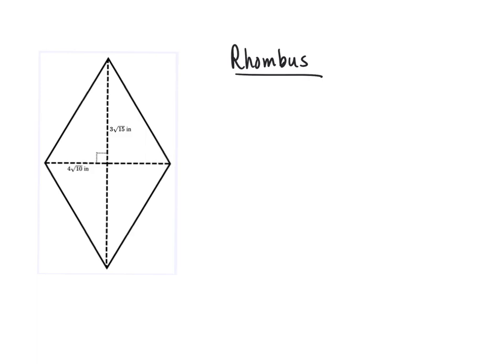Here we have a rhombus with diagonals and we have half of each diagonal. The formula for the area of a rhombus is one-half d1 d2.